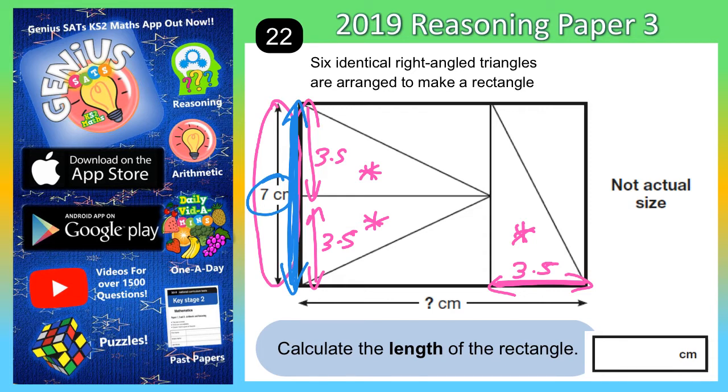The whole thing makes a rectangle. So, if it's 7 centimetres down that side, it is also 7 centimetres down the other side, because opposite sides in a rectangle have the same length.